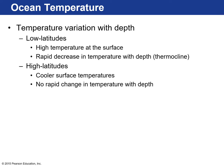If we think about not just the surface of the ocean but going down in depth, there are temperature variations compared to the surface. At low latitudes like the equator, you usually have high temperature at the surface, and as you go into deeper and deeper water there's a rapid decrease in temperature with depth.